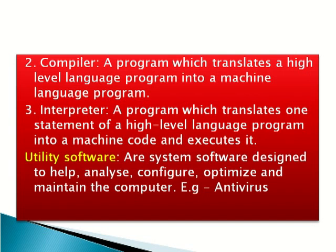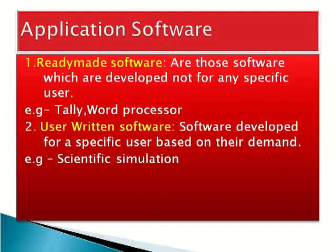Example of utility software: antivirus. There are two types of application software: ready-made software and user-written software. Ready-made software are those developed not for any specific user, for example Tally and word processor. User-written software are software developed for a specific user based on their demand, for example scientific simulation.